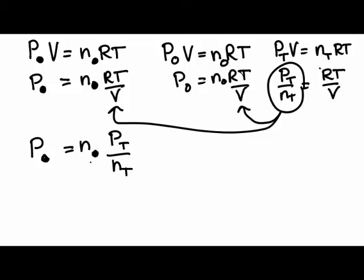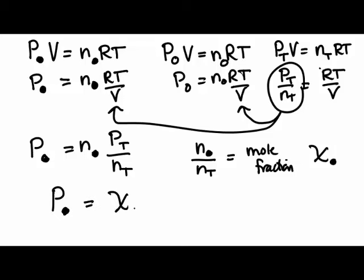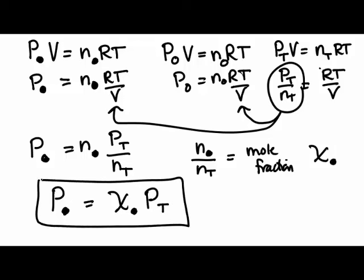Notice that we have n for a component, the number of moles of a component, divided by the total number of moles. We have another name for that: the mole fraction for that component, which we represent as χ (chi). So our final expression is: the pressure for some component equals χ, the mole fraction for that component, times the total pressure. That is a general expression we will use for different species.